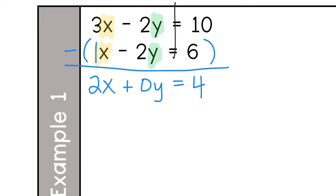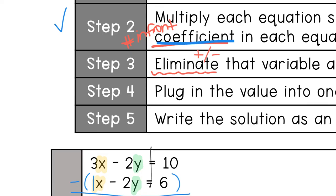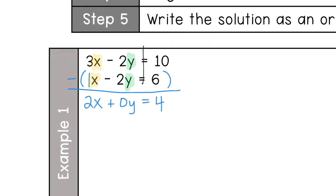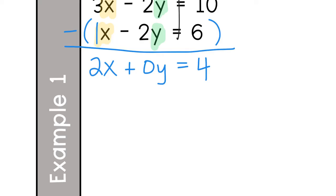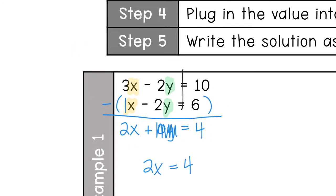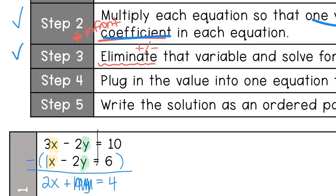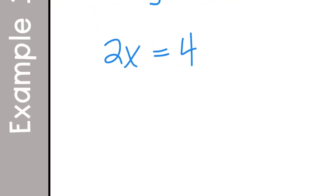We're almost done with step three. I haven't truly eliminated anything yet because I still have x and y. But we can get rid of the y because it's zero — zero y drops out. So this equation turns into 2x equals 4, and the y got eliminated. To solve for x, we divide both sides by 2, giving us x equals 2.